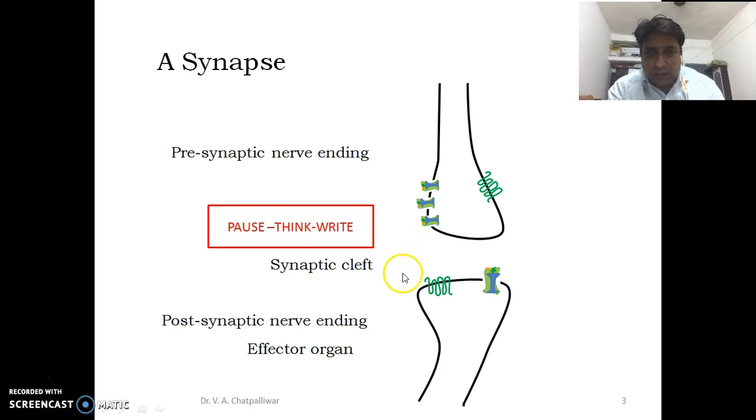Now, the membrane of nerve cells or muscle cells are densely populated with proteinous structures called receptors. These receptors are located both presynaptically as well as postsynaptically. These receptors are of different types.